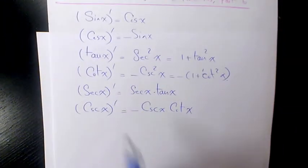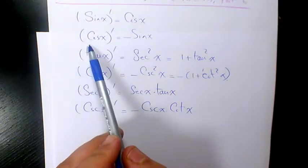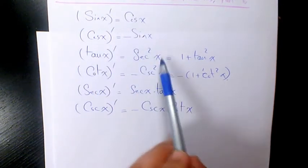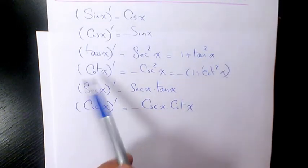Of the derivative of these functions. We know the derivative of sine x is cosine x, derivative of cosine x is negative sine x, derivative of tan x is secant squared x or 1 plus tan squared x.